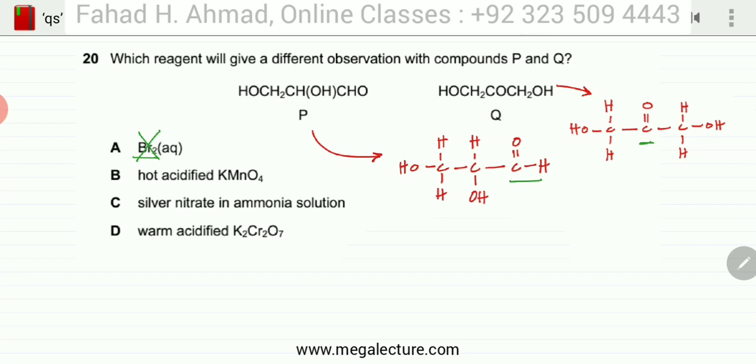The next one is hot acidified KMnO4. KMnO4 is an oxidizing agent and we already know that if you have an alcohol, whether it's a primary alcohol or a secondary alcohol or an aldehyde, both of them, alcohols, primary alcohols, they are going to get oxidized. So KMnO4, the problem is it's going to react with both of them. It's going to oxidize both of them.